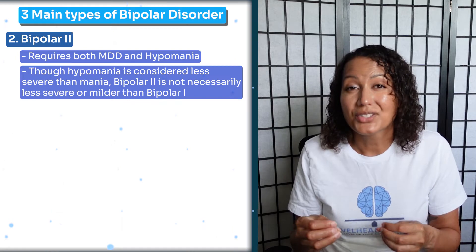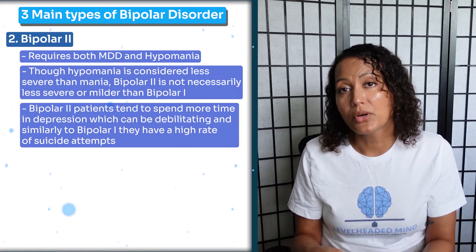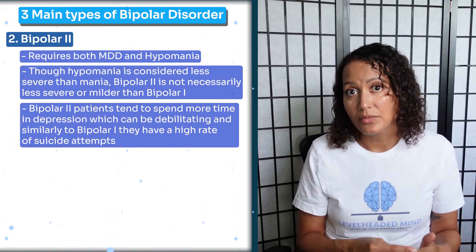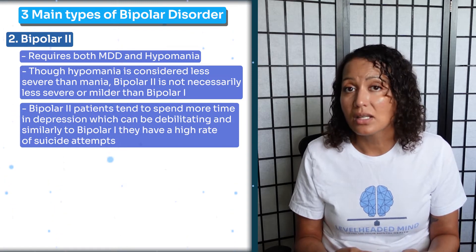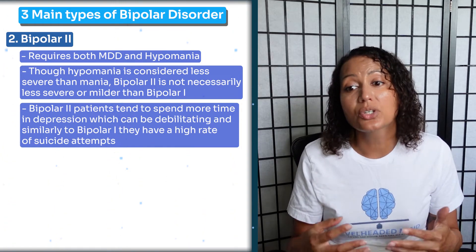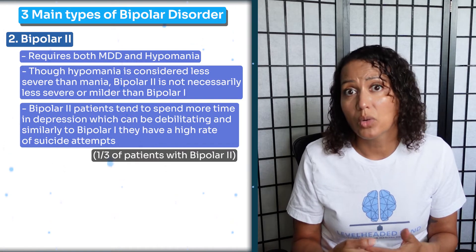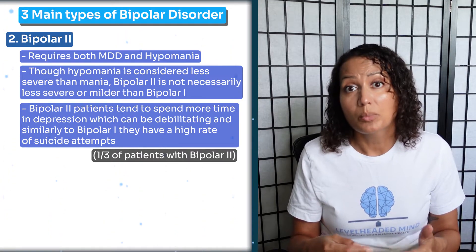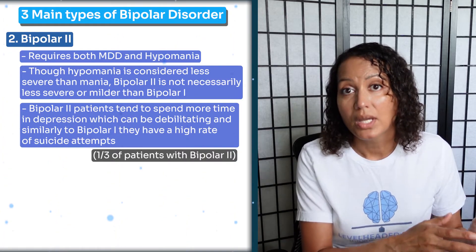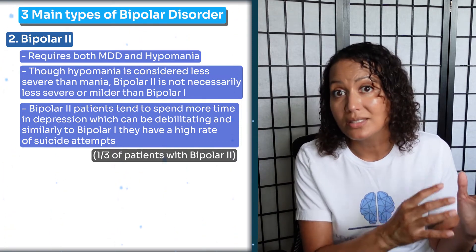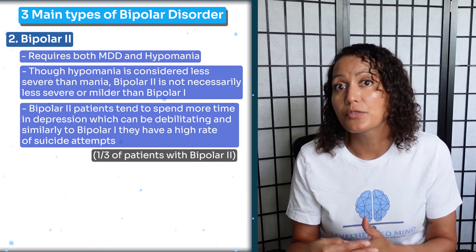Though hypomania is considered less severe than mania, Bipolar II can still be very debilitating. When a person with Bipolar II goes into their depressive episodes, they are just as high at risk for suicidal ideation and acting on those thoughts, with an increased rate of suicide — in fact, one in three patients with Bipolar II disorder will attempt suicide. So Bipolar II is by no means less severe than Bipolar I.